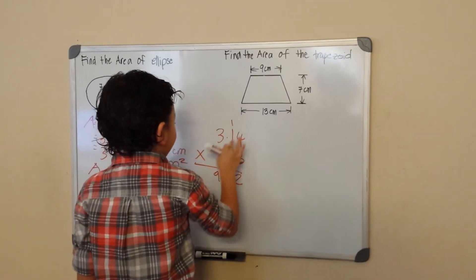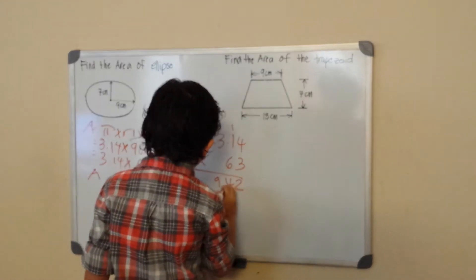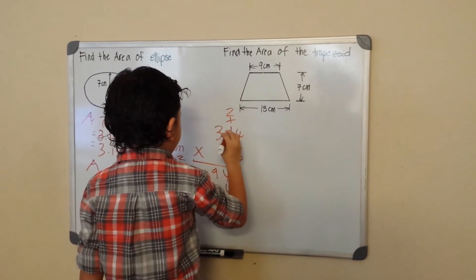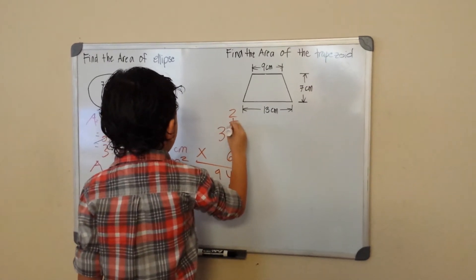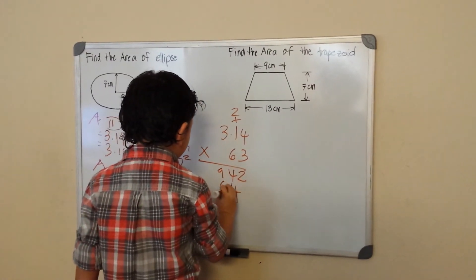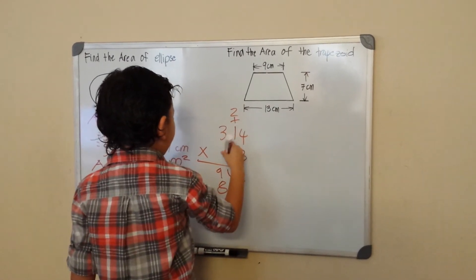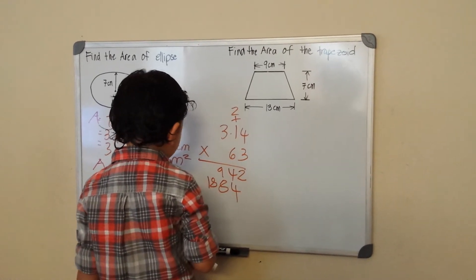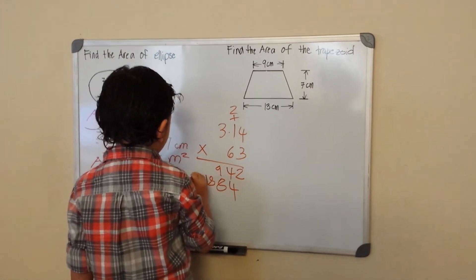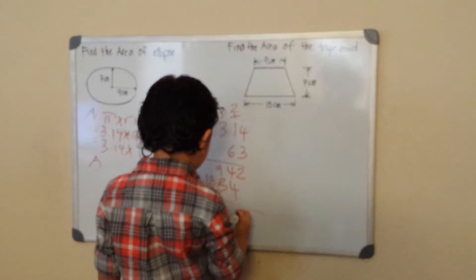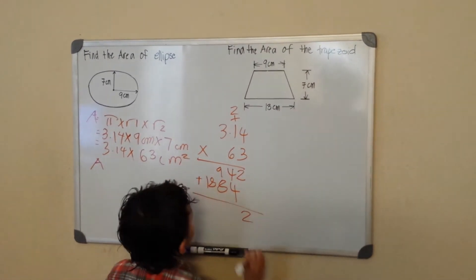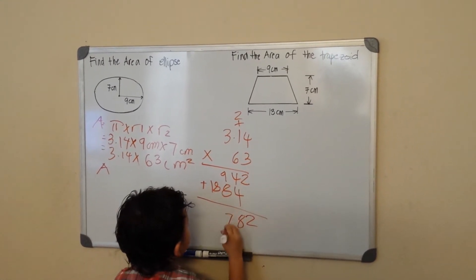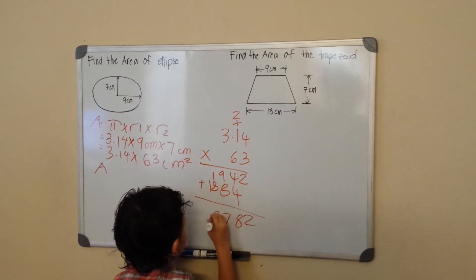Now for the 6: 6 times 4 is 24, carry the 2. 6 times 1 is 6, plus 2 is 8. 6 times 3 is 18. Now we add them up. 9 plus 8 is 17, carry 1. 1 plus 8 is 9. So we get 1, 9, 7, 2.